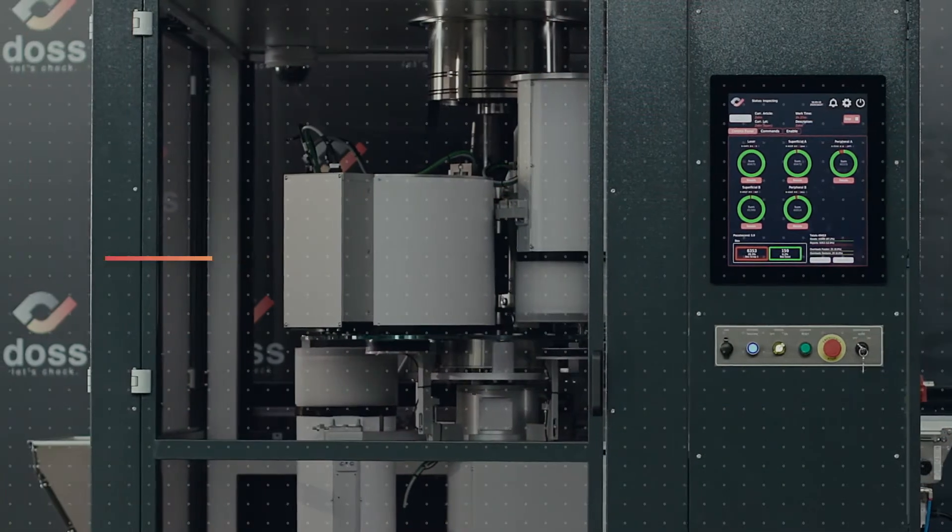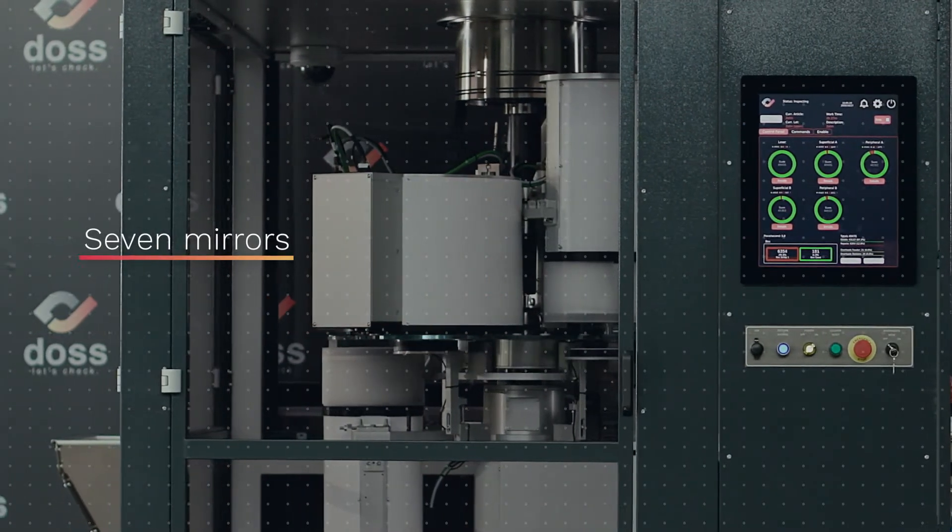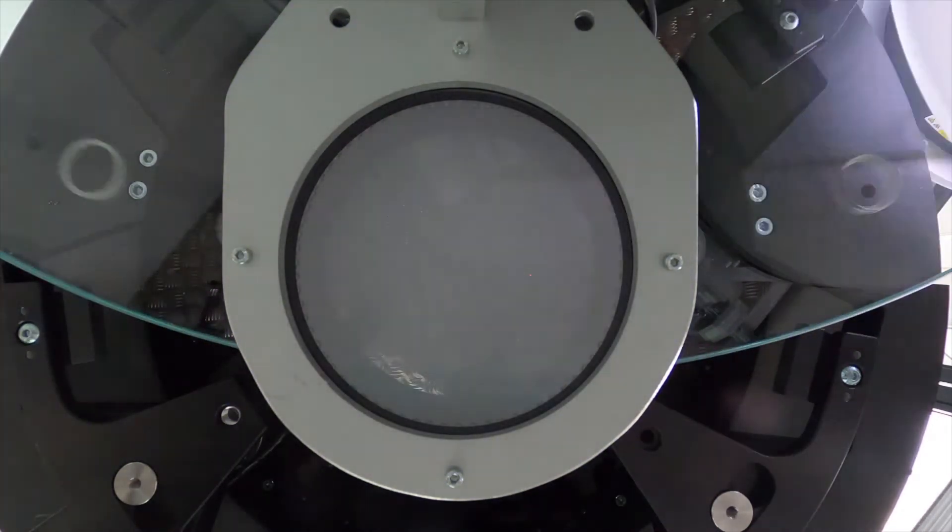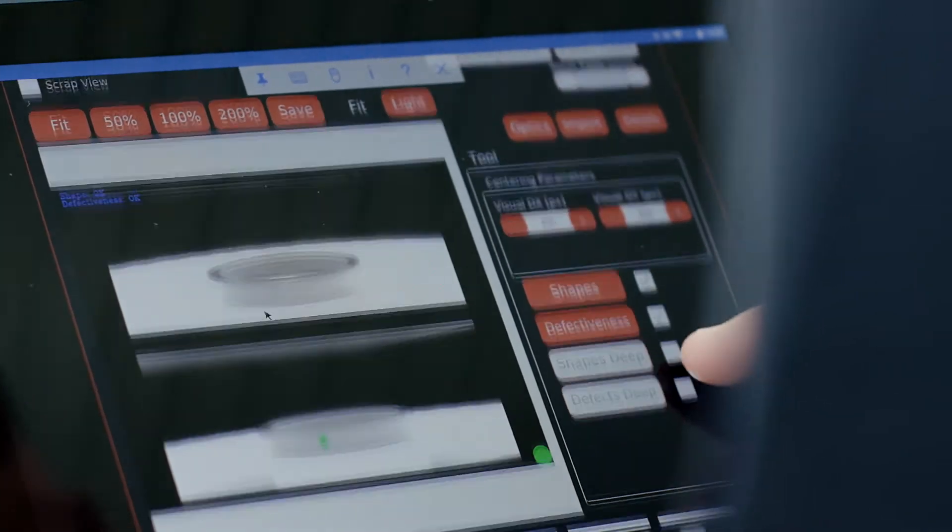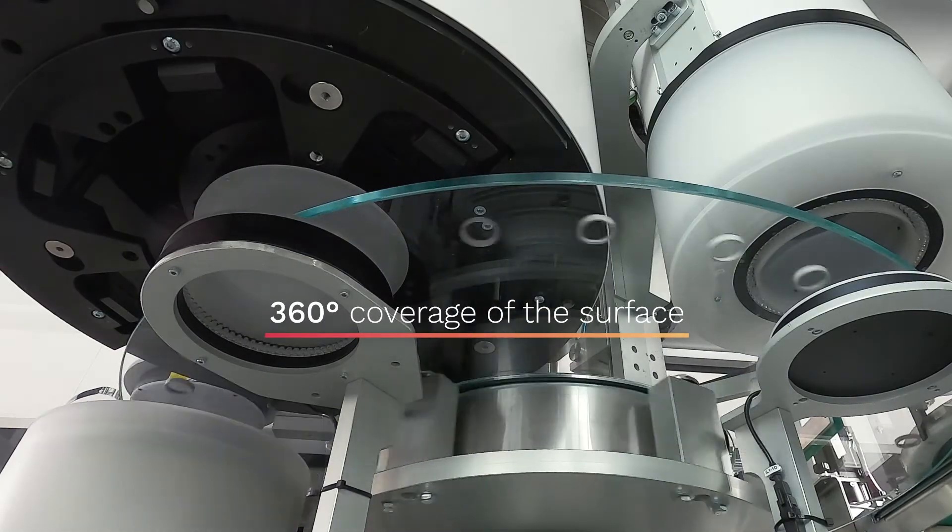The peripheral station is equipped with seven mirrors which allows customization of the peripheral views according to the morphology of the article to be checked. It can acquire in a single image a double view of the piece, both angled and lateral, allowing a 360-degree coverage of the surface.